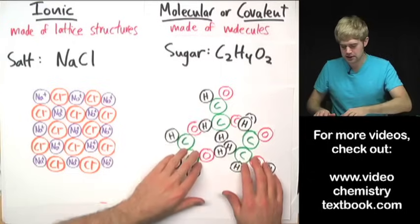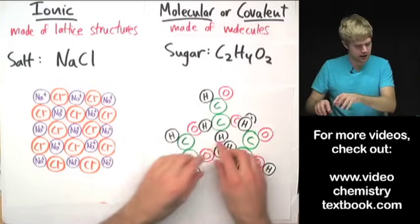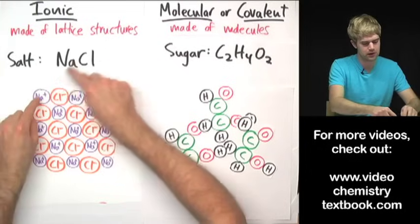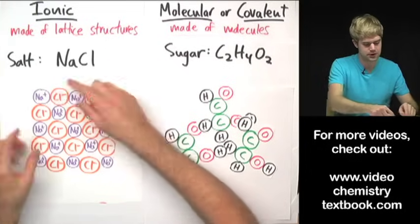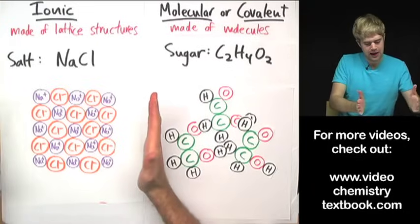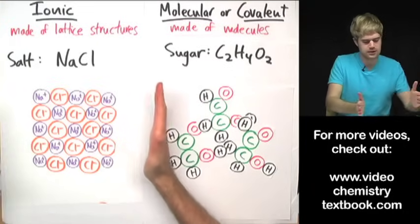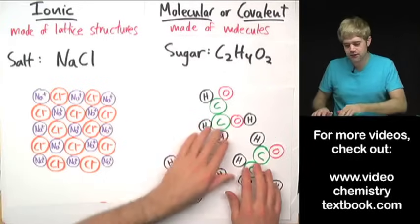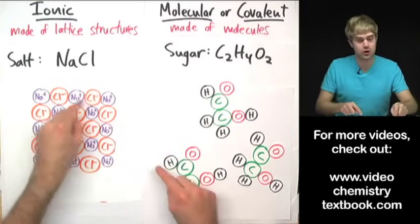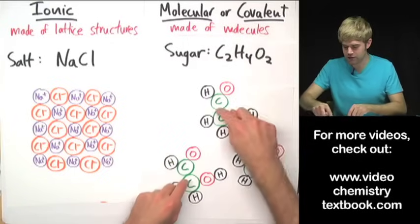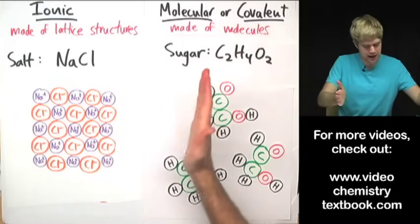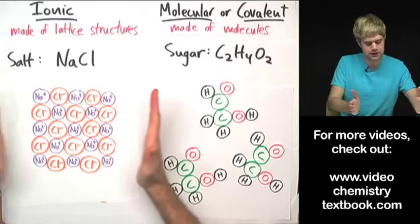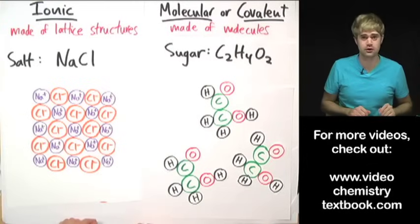Look how different this is from the molecules that make up sugar. You just have the sodium and the chloride atoms stuck together in this sort of very organized, box-like shape. This is what a lattice structure is. There aren't individual clumps of sodium chloride the way there are individual clumps of sugar. Instead, all the atoms are stuck together in this very regular shape.